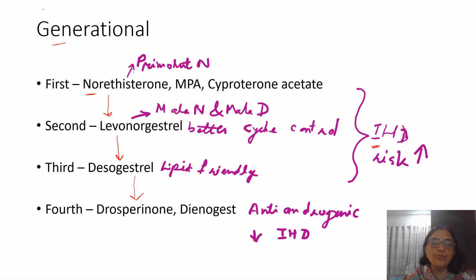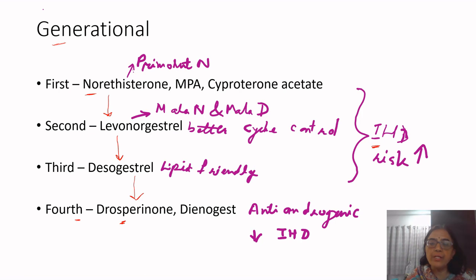Further search resulted in the introduction of fourth generation progestogens: drospirenone, which is a spironolactone derivative, and dienogest, which is a gonane. Both drospirenone and dienogest are anti-androgenic and, instead of increasing the risk for ischemic heart disease, they are actually cardioprotective.